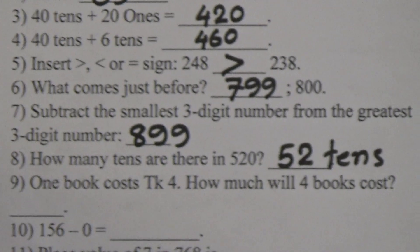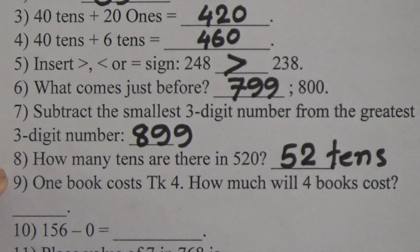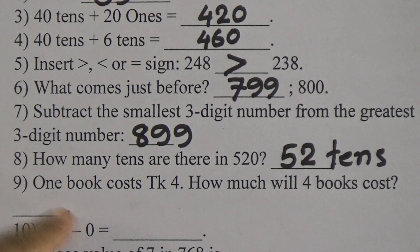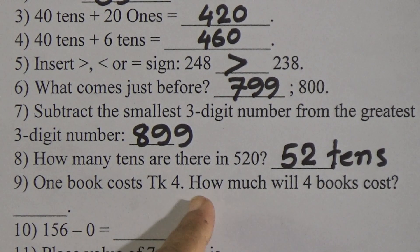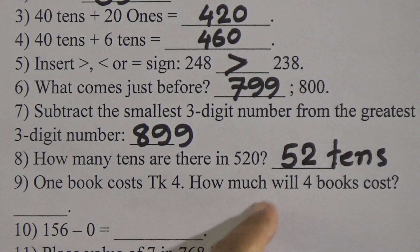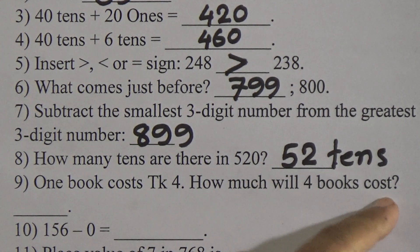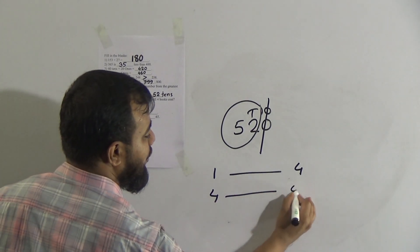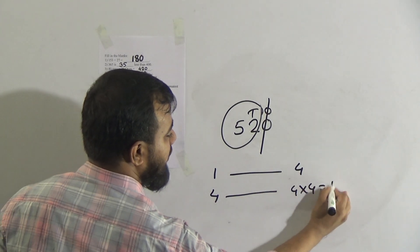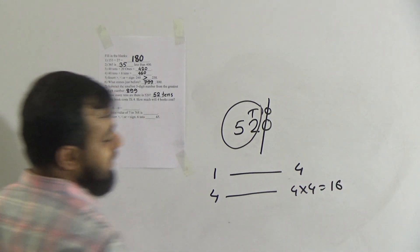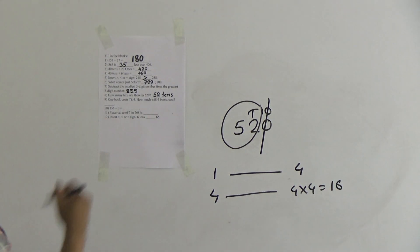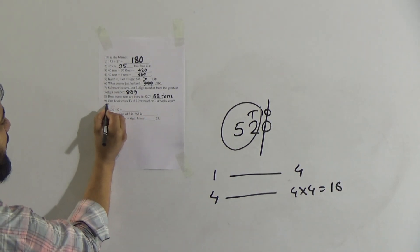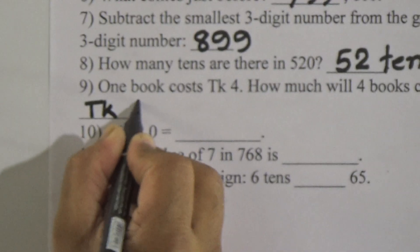Question number 9: one book costs 4 taka, so how much will four books cost? One book costs 4 taka, so four books cost 4 multiplied by 4, which equals 16 taka. You can write TK 16.